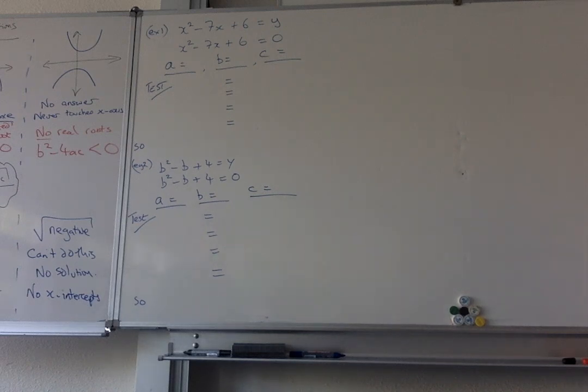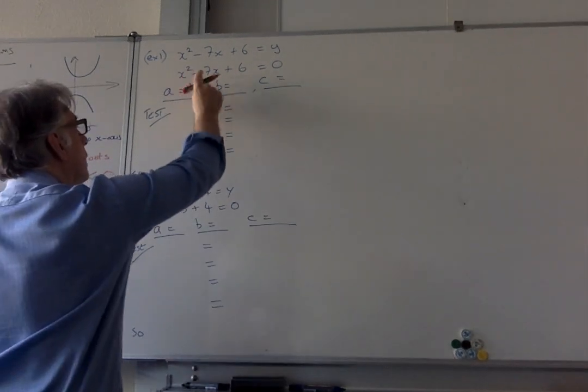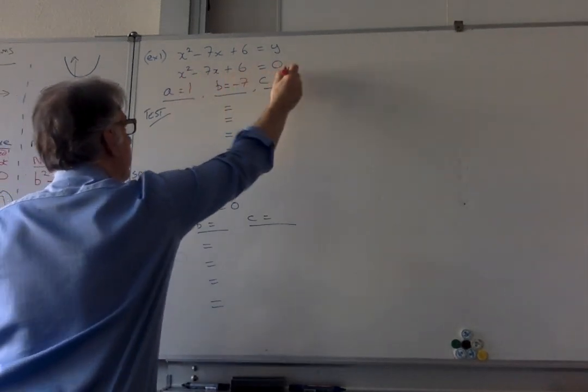So let's check that you can actually do that first part. And you should have said that a was 1, b is minus 7, c is 6. Easy enough.